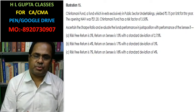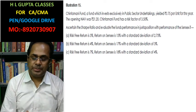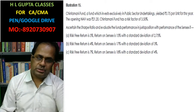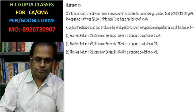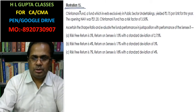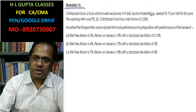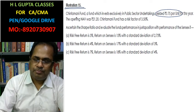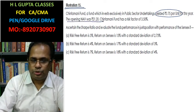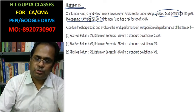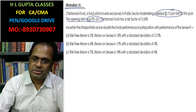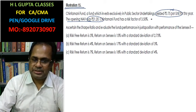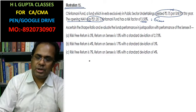Hello friends, I am going to discuss Illustration Number 15. This is a question from the CMA Final SFM on mutual funds. Chintamani Fund, which has invested exclusively in public sector undertakings, yields rupees 3.75 per unit for the year. The opening net asset value is 21.20, meaning if you invest 21.20, the return is 3.75 for the year. The standard deviation of Chintamani Fund is also given.